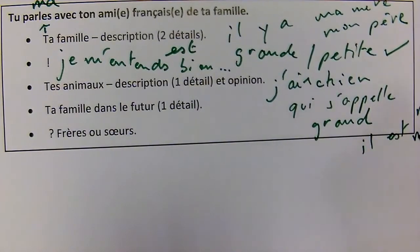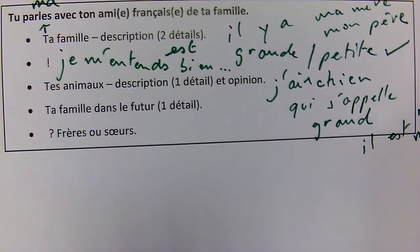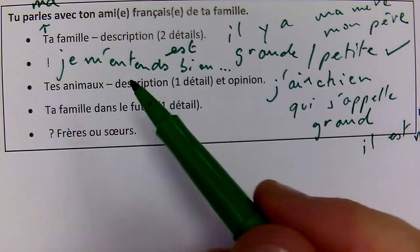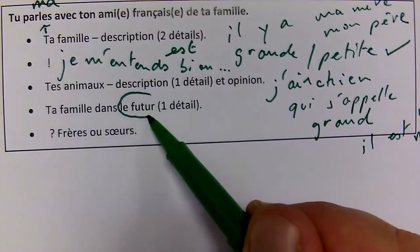'J'ai un grand chien' — masculine — 'et un opinion: il est mignon' — is it cute? Or maybe 'il est méchant' — nasty. 'Il est sympa.' Super!